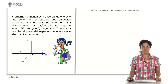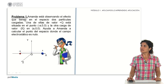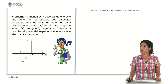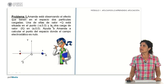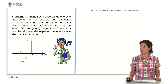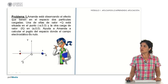Let's look at the first of the problems. In this one, Amanda is observing the effect in space of two charged particles, one of them of value plus Q, which is located at the point minus a, 0 of a Cartesian reference frame, and the other charge of value minus 2Q at the point a, 0. We want to help Amanda calculate the point in space where the electrostatic field is going to be zero.